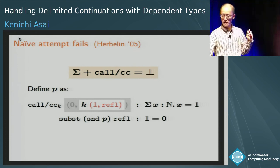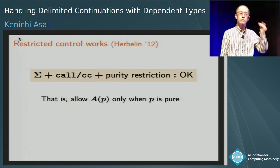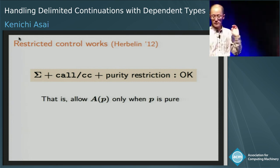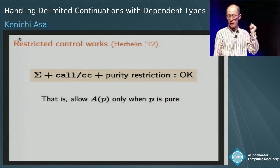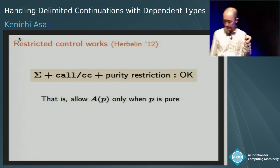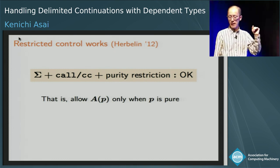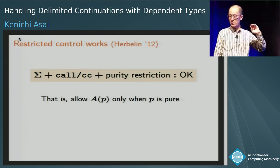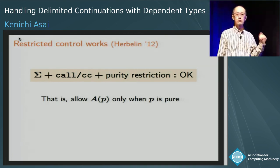Several years later, Elbram also showed that if we introduce a purity restriction into the language, then the inconsistency can be avoided. That is, we allow a type A to be dependent on a term P only when P is a pure, effect-free term. This effectively avoids the backtracking and avoids the inconsistency. This is the restriction needed for the undelimited control case.